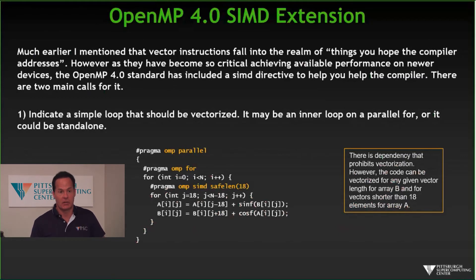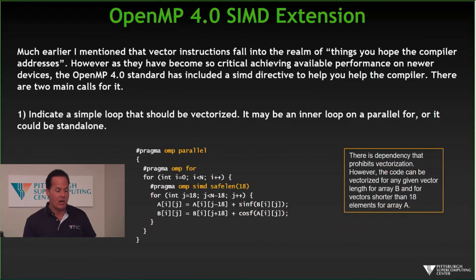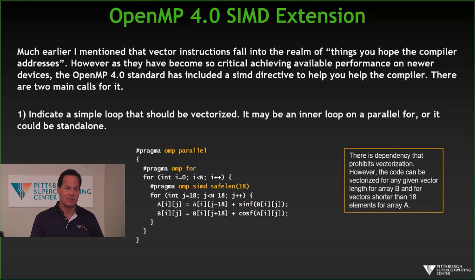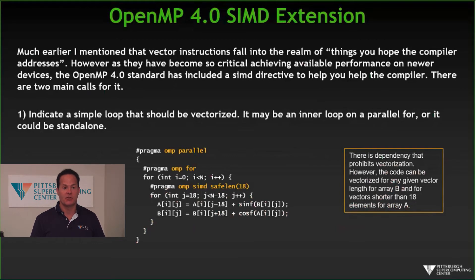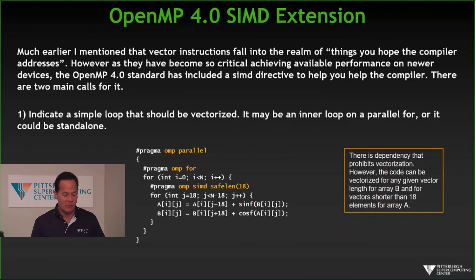OpenMP 4 does have a few things not concerned with accelerators, though not many. The most important is the SIMD extension. Vector instructions are the reason that dependencies have been problematic for decades. The compiler hopefully does vectorization for you automatically behind the scenes, but sometimes the compiler doesn't do a good job. With OpenMP 4, they've given you the ability to control vectorization a little more using SIMD instructions — you can force a loop to vectorize properly.